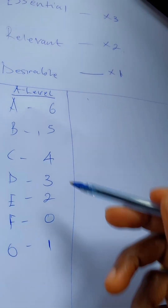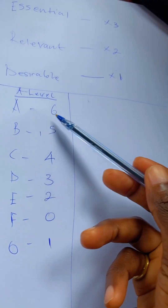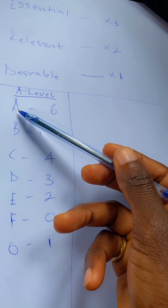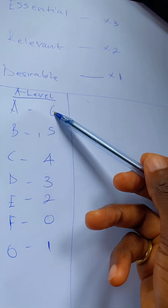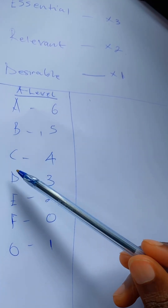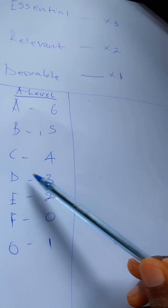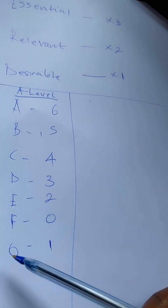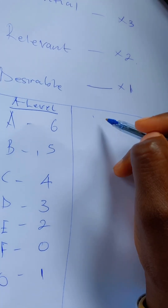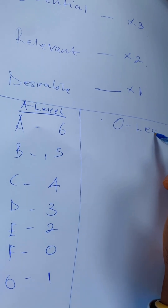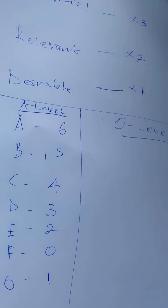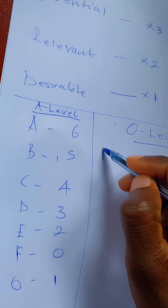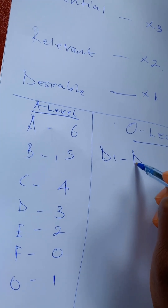To clarify the A-level scale: A is equivalent to 6 points, B to 5, C to 4, D to 3, E to 2, F to 0, and O is 1 point. Now let's look at how O-level points are calculated. At O-level, every distinction — that is D1 and D2 — you multiply that distinction grade by 0.3.